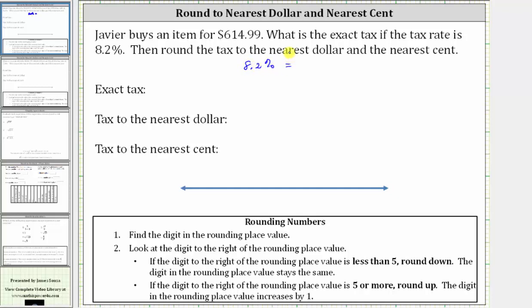To convert a percent to a decimal, we drop the percent sign and divide by 100 or drop the percent sign and move the decimal two places to the left. Notice if we move the decimal two places to the left, one, two, we have a missing digit. We fill in the missing digit with a zero, which gives us .082.